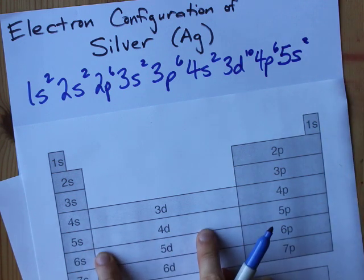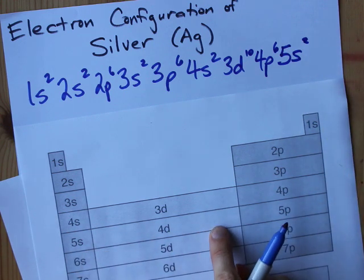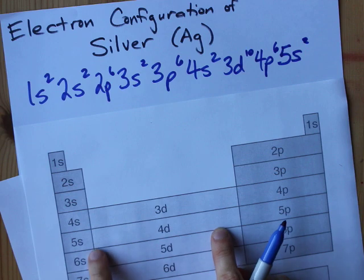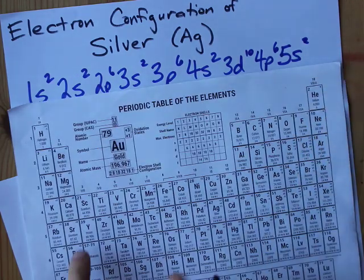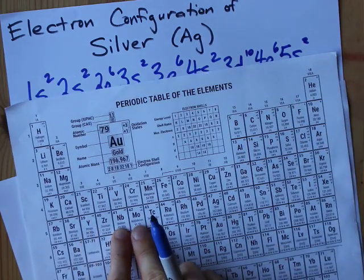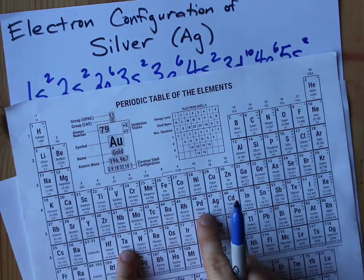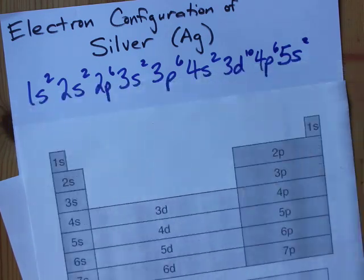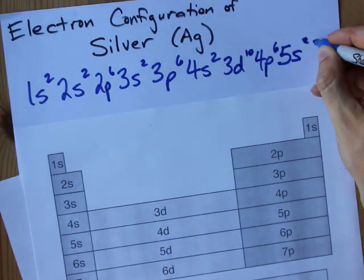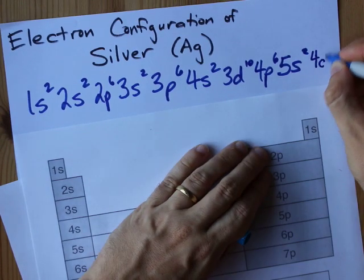And then we get to 4d, which is where silver is. Now, we count 9 elements into silver here, 1, 2, 3, 4, 5, 6, 7, 8, 9 elements in from yttrium all the way up to silver. So we're going to call this 4d9.